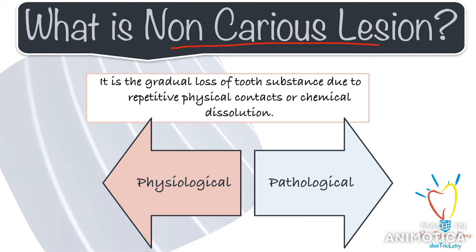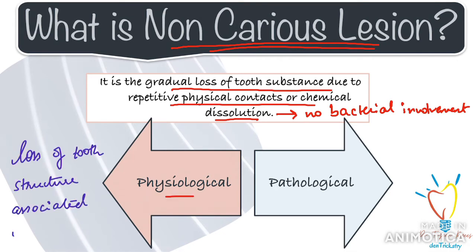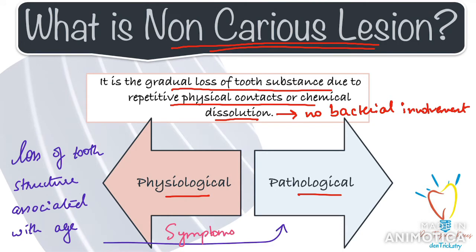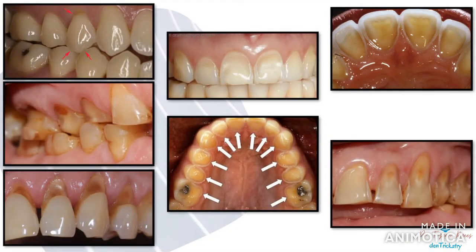To begin with, let us see what tooth wear actually means. Tooth wear is medically called non-carious lesions. It is a gradual loss of tooth substance due to repetitive physical contacts or chemical dissolution, and as the name suggests, it does not have any bacterial or carious involvement. Tooth wear can be categorized as physiological and pathological. Physiological tooth wear is a loss of tooth structure associated with aging, with no specific cause. But once the amount of tooth wear becomes so severe that it compromises the health of a tooth and the patient starts experiencing symptoms, it can be considered pathological. These are some of the different forms that tooth wear presents itself in.